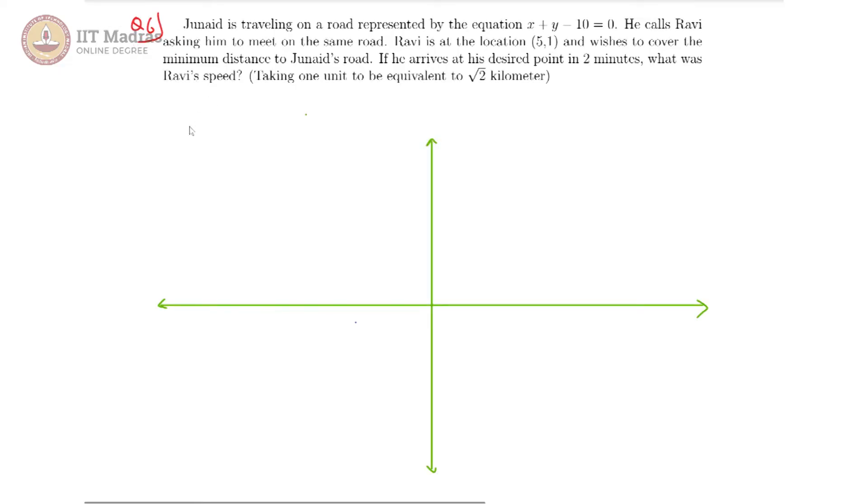In the graph, if we plot that, we can see that x plus y is equal to 10, which gives us x by 10 plus y by 10 is equal to 0, which means the x intercept and y intercept are both equal to 10.